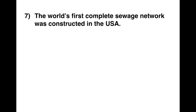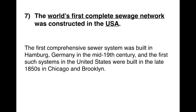Finally, question seven: 'The world's first complete sewage network was constructed in the USA.' Look for the world's first complete sewage network and whether it was in the USA. The passage says: 'The first comprehensive sewer system was built in Hamburg' — that tells you everything. The first one was in Hamburg, Germany, not in the USA. Even though the United States is mentioned, the correct answer is clearly Germany, Hamburg. So the answer is False.